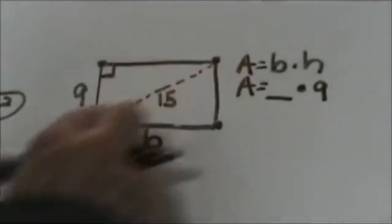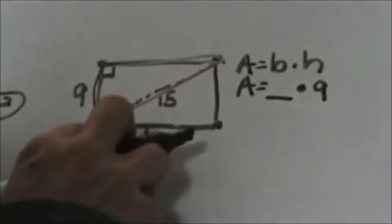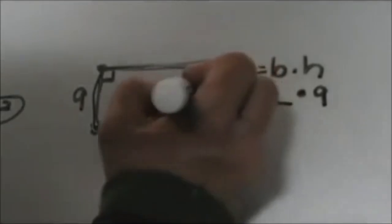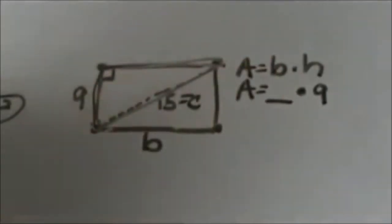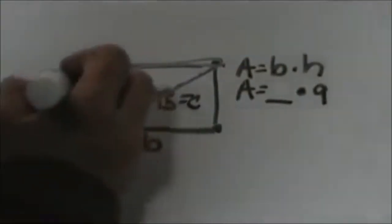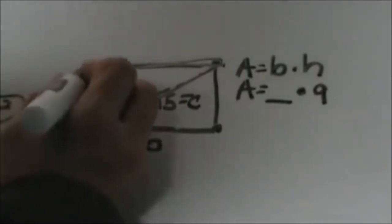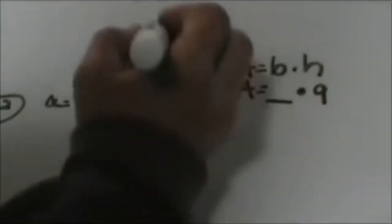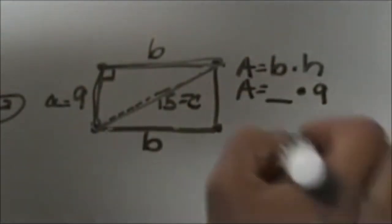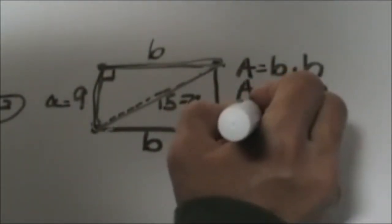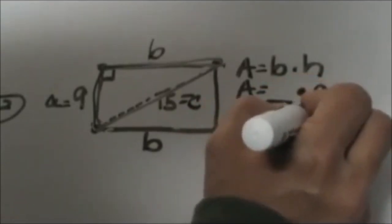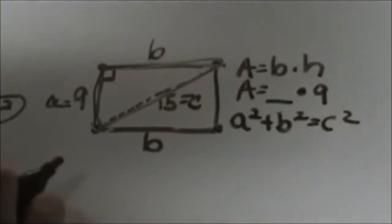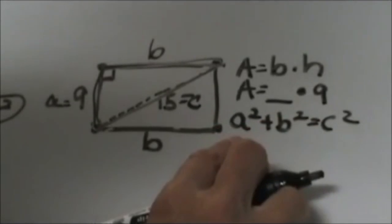Now if you'll notice we have a right triangle in a rectangle. So here's our right triangle. We've got this side which is 15 which is our hypotenuse. We call that c in the Pythagorean Theorem. We have the length 9 over here which let's designate that as a and then this is b. So our Pythagorean Theorem is a squared plus b squared equals c squared and we've got two of the sides so we can solve for the third.